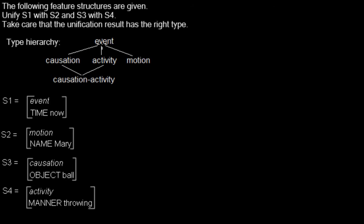Here we have the type hierarchy given and we are asked to unify S1 with S2. Now I unify S1 with S2 as the task asks me to. This new feature structure will of course contain all properties of either S1 or S2.